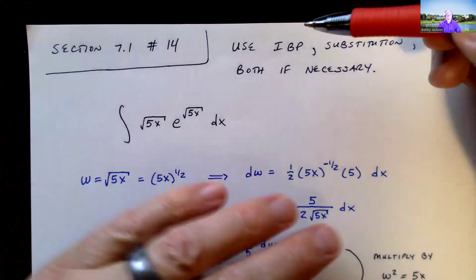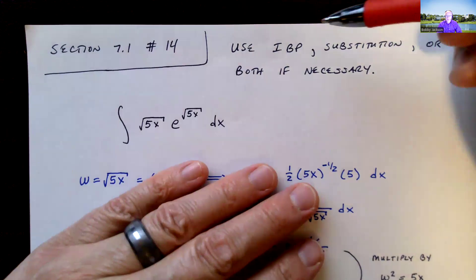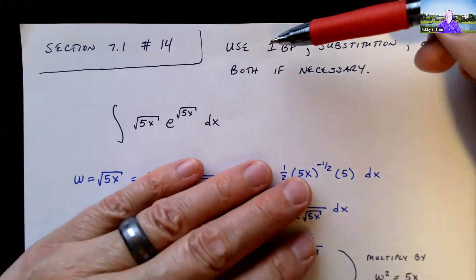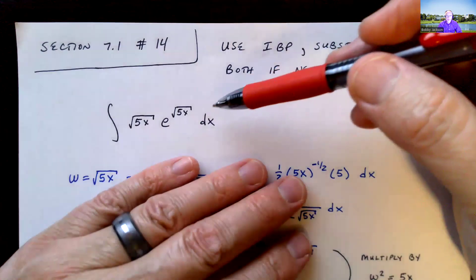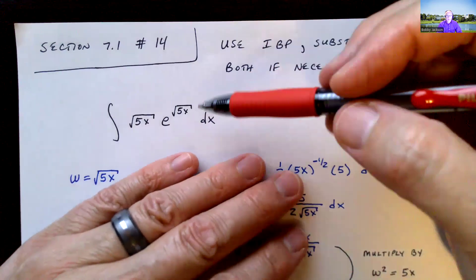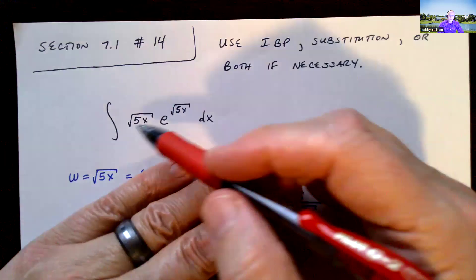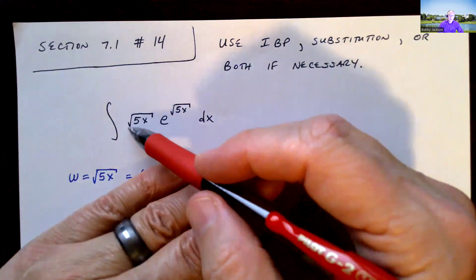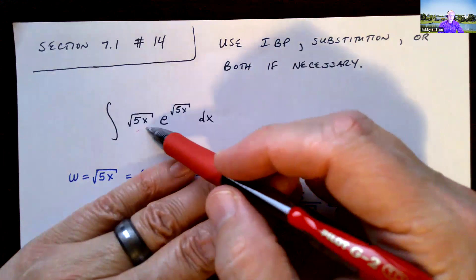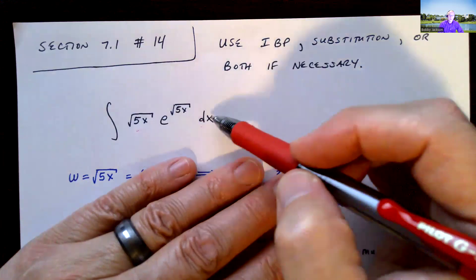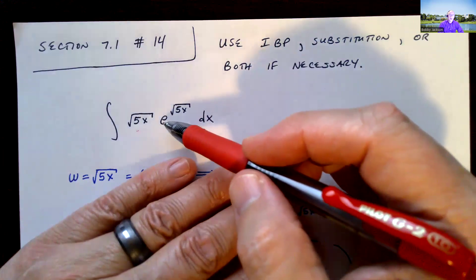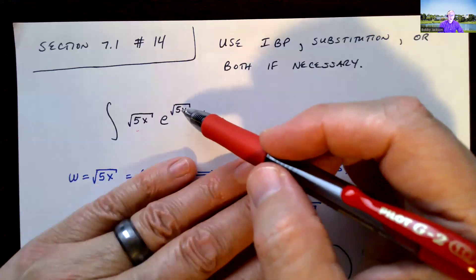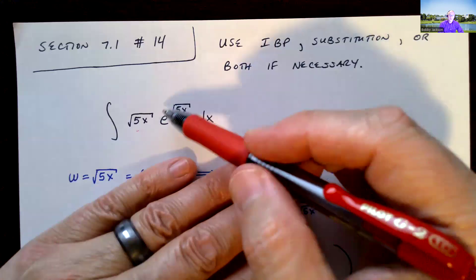We're going to look at number 14 in section 7.1 — a really interesting one. The problem says to use integration by parts, substitution, or both if necessary to evaluate this definite integral. You might start off thinking you'll just use integration by parts and choose u to be this algebraic expression and dv to be e to the square root of 5x. The problem is you can't easily find the antiderivative of e to the square root of 5x.